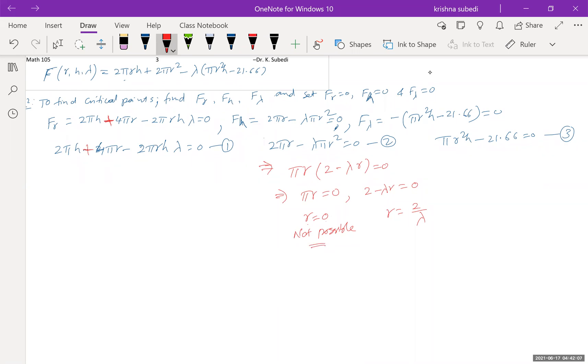Solving this, I got r equal to 0 and r equals 2 over lambda. r equal to 0 is not possible. Because if r is 0, then there is no beverage can. So one of the possibilities is r equals 2 over lambda. So let us substitute this in any one of these two equations. Substituting r equals 2 over lambda in equation 1.